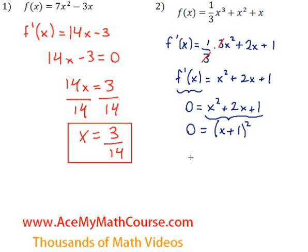Then I can take the square root of both sides. The square root of 0 is just 0. And the square root of x plus 1 is just x plus 1. Then I can subtract 1 from both sides of the equation. And x is going to be equal to just 0 minus 1, negative 1.